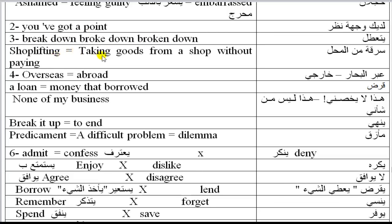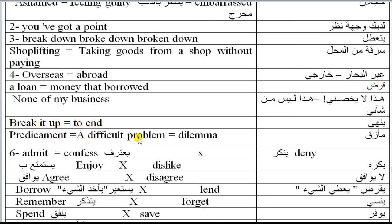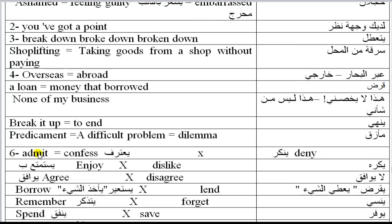Shoplifting — taking goods from a shop without paying. Overseas — abroad. Alone. Money that is borrowed. None of my business. Break it up. Tend — the O is silent. Tend — to finish. Predicament — a difficult problem. In American English 'problem' has the O pronounced as A. Dilemma.